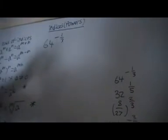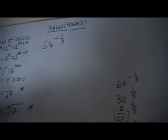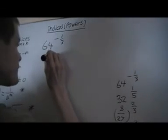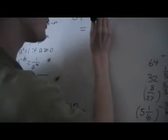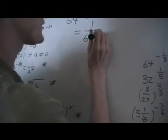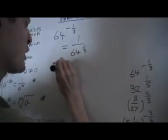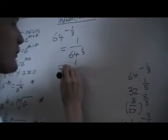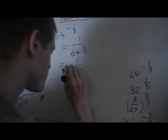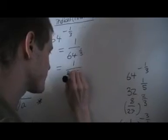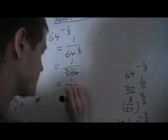Next example is going to be 64 to the minus 1 third. So this is a bit more challenging. How we're going to do it is we're going to rewrite that by using the 5th rule. There's 1 over 64 to the 1 third. Then we're going to use the 6th rule and say that's the cube root of 64. Then when we work that out, we'll get 4, so there's 1 fourth here.